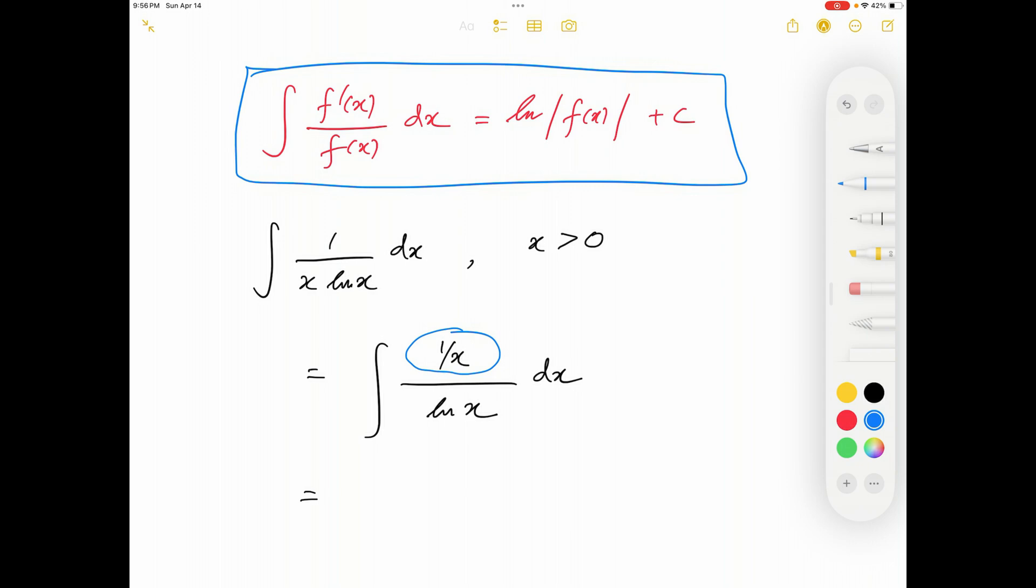That's found on the numerator. Therefore, the answer of this integral can be written as ln of absolute ln x plus C.